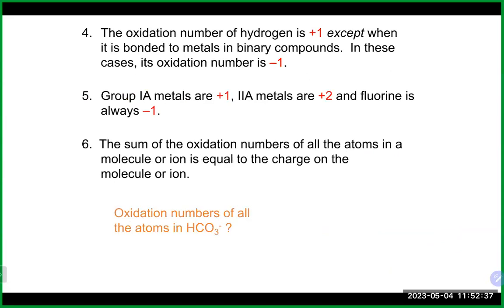Hydrogen is +1 except when bonded after a metal (hydride), such as in LiH where hydrogen is −1. Group 1 elements are +1 and Group 2 elements are +2. Fluorine is always −1. The sum of all oxidation numbers in a molecule must equal its overall charge — zero for a neutral molecule, or the actual charge for an ion.